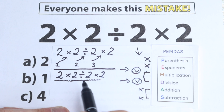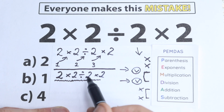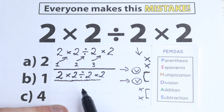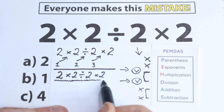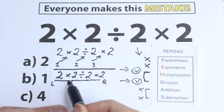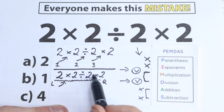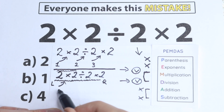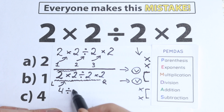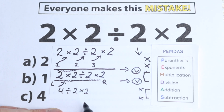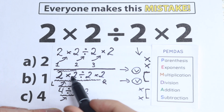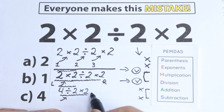So what is the correct order? We have multiplication, division, multiplication — what do we start with? We look at it from left to right. The first sign from left to right is multiplication. This is the second one, and this is the third one. So we start with 2 times 2, which equals 4. Now we have 4 divided by 2 and times 2. The next first sign from left to right is division — 4 divided by 2 equals 2, and then 2 times 2 equals 4.